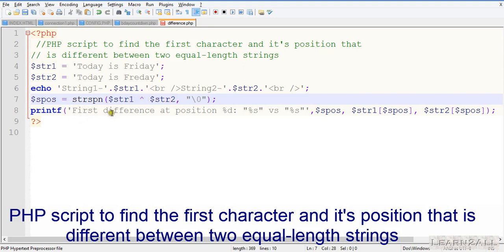Then in the printf statement, I have printed the statement which is the position and which character is different. For that position, string1 into position and string1 in bracket of position variable is used.